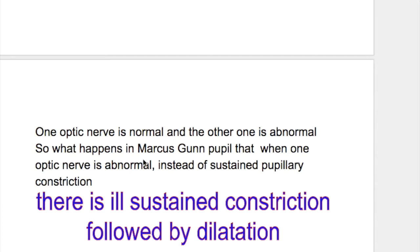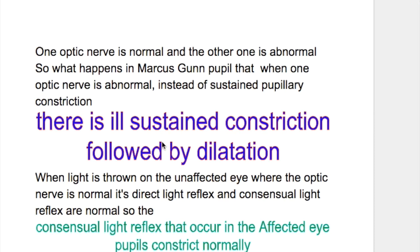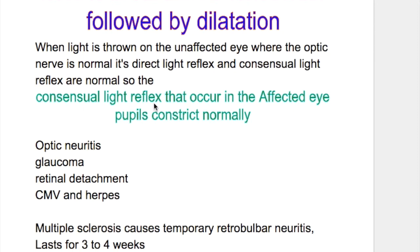What happens in Marcus Gunn pupil? Instead of sustained pupillary constriction, there is ill-sustained constriction followed by dilatation — that occurs in the abnormal pupil with the direct light reflex. When light is thrown on the unaffected eye, where the optic nerve is normal, its direct light reflex and consensual light reflex are both normal. So the consensual light reflex that occurs in the affected eye — the pupil will constrict normally.